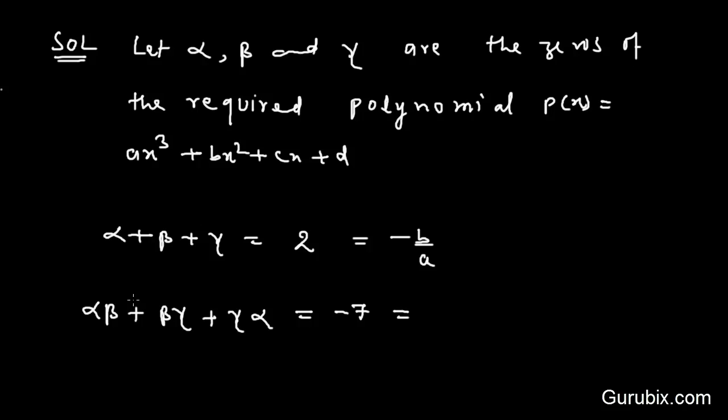And we know that the sum of product of zeros taken two at a time is equal to c over a.